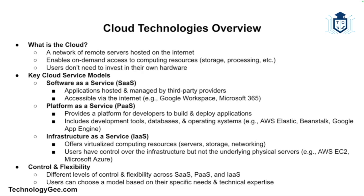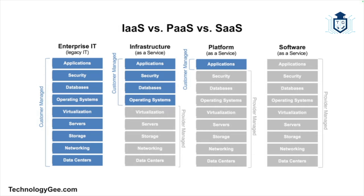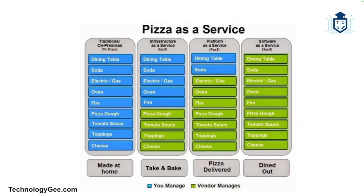On your screen is a graphic displaying the differences between infrastructure as a service, platform as a service, and software as a service. Everything highlighted in blue represents what you or your company are responsible for, and everything highlighted in gray is what your cloud service provider is responsible for. There is also a pizza-as-a-service graphic — everything in blue is what you are responsible for, and everything in green is what the vendor is responsible for.